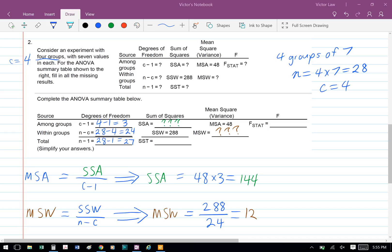Afterward we can find the mean square variance and the sum of square variance. The concept here is that mean square variance equals sum of square variance divided by the degree of freedom. So MSA equals SSA divided by c minus 1. So our SSA equals 48 times 3, which equals 144.